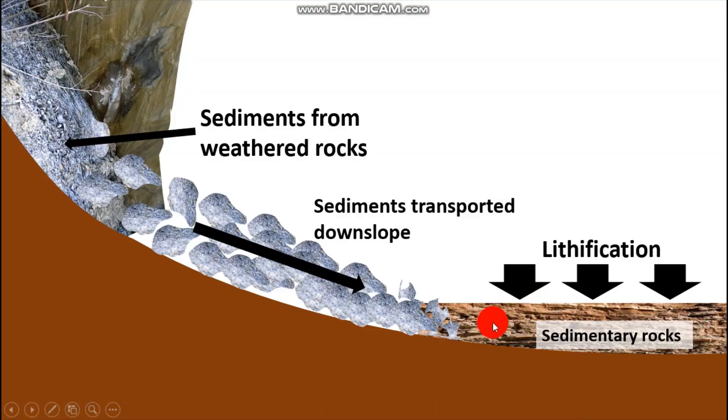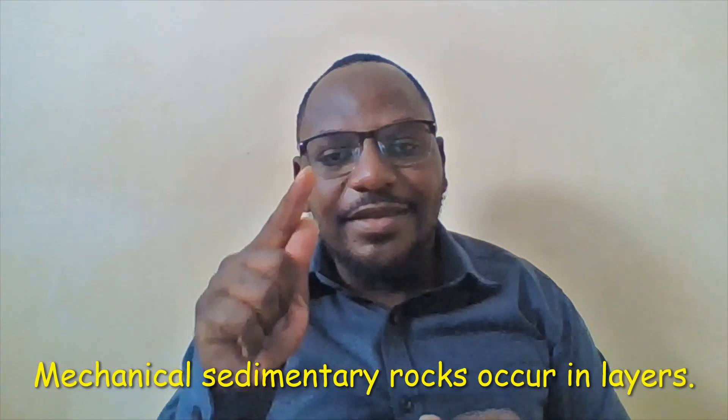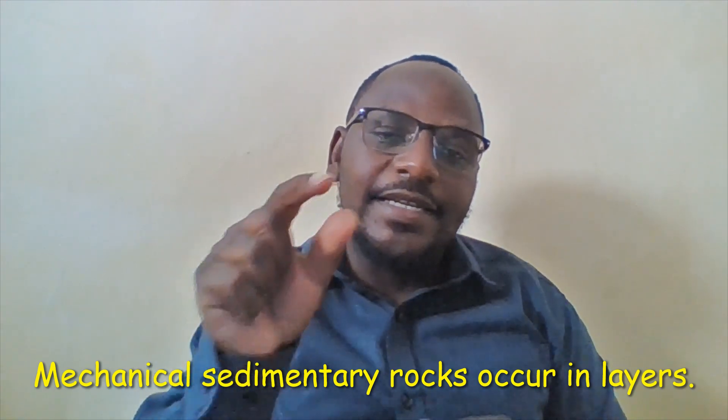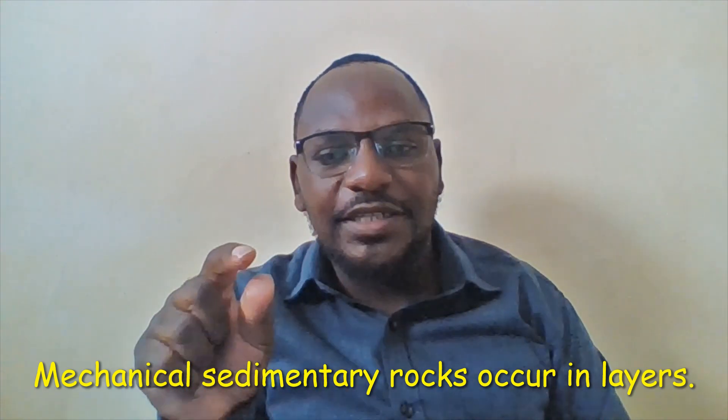Eventually they build up such that the weight of the overlying rocks is so high that they start undergoing lithification, whereby the sediment compresses to produce a rock with different layers — which is a sedimentary rock. This is how a mechanically formed sedimentary rock forms. Examples are sandstone and claystone.